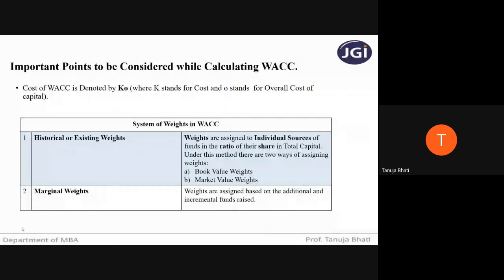The next system is marginal weights. Marginal weights mean weights are assigned based on the additional and incremental funds raised. The word itself means on any additional or incremental funds raised. Suppose originally equity was raised for 50 lakhs — this becomes historical. Now after two months, additionally 5 lakhs has been raised. Only that 5 lakhs weight will be assigned to equity under marginal weights. You will ignore the initial value under marginal weights.